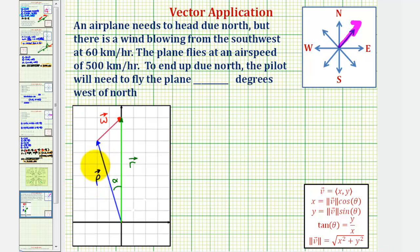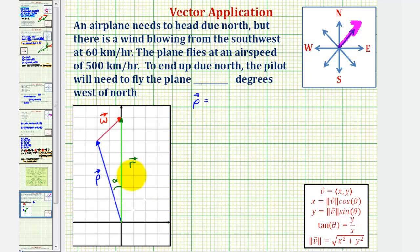Notice how if we sum vector p and w, we want the sum to be the resultant vector that's heading due north. So what we'll do is write each of these vectors in component form and then set up an equation to solve for alpha. Let's begin with vector p. We'll use the fact that the x component equals the magnitude times cosine theta, and the y component equals the magnitude times sine theta. Because the plane is flying at 500 kilometers per hour, the magnitude is 500.